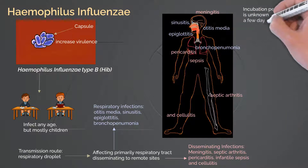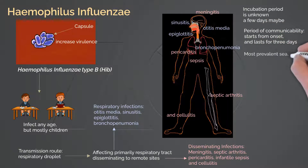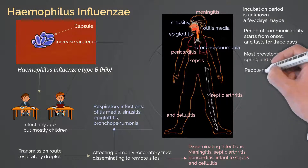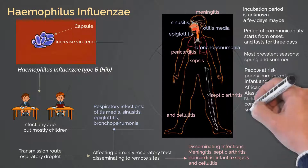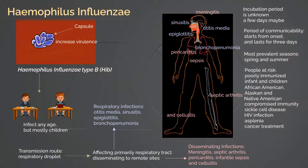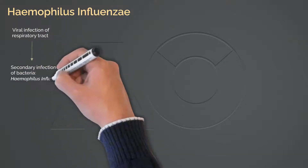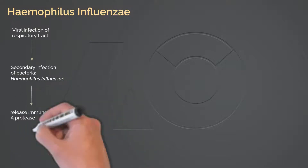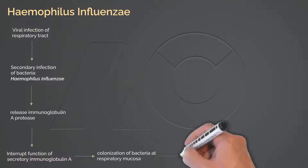The incubation period is not known, perhaps a few days. Communicability starts from the onset of symptoms and lasts for three days. It is more prevalent in spring and summer seasons. People at risk are those who are not well immunized, especially infants and younger children. Certain populations are at increased risk, including African-American, Alaskan, and Native Americans. People with compromised immune systems due to sickle cell disease, HIV infection, asplenia, or cancer treatment are also at risk. Typically, the story begins with a viral respiratory infection, followed by a secondary bacterial infection of HIB. As the bacteria releases immunoglobulin A protease, the function of immunoglobulin A is interrupted, and the bacteria colonizes the mucosa layer of the respiratory tract.